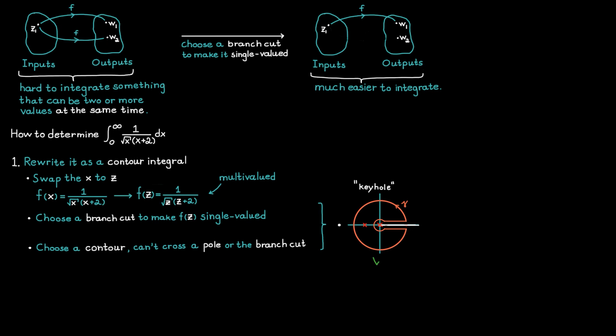You could, for example, take our first figure here and rotate it a bit to make it look something like this. And this new setup would also be valid to use. But just remember that you cannot use the last one here, for example, since the contour in that case crosses one of the poles, so that one would not be valid. Here we actually have two different setups to choose from. I'm going to stick with the first one, because it contains lines that go horizontal to the real axis, and these two lines are essential to determine the integral we started with.